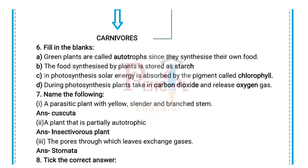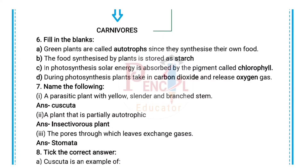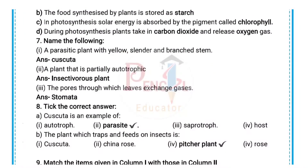(b) The food synthesized by plants is stored as starch. (c) In photosynthesis, solar energy is absorbed by the pigment called chlorophyll. (d) During photosynthesis, plants take in carbon dioxide and release oxygen gas.